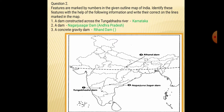Question number two: Features are marked by numbers in the given outline map of India. A dam constructed across the Tungabhadra River is situated in Karnataka — that is Tungabhadra Dam. Second, on the border of Telangana and Andhra Pradesh, Nagarjun Sagar Dam is situated. Third, a concrete gravity dam — that is Rihand Dam, located in the east corner of Uttar Pradesh.